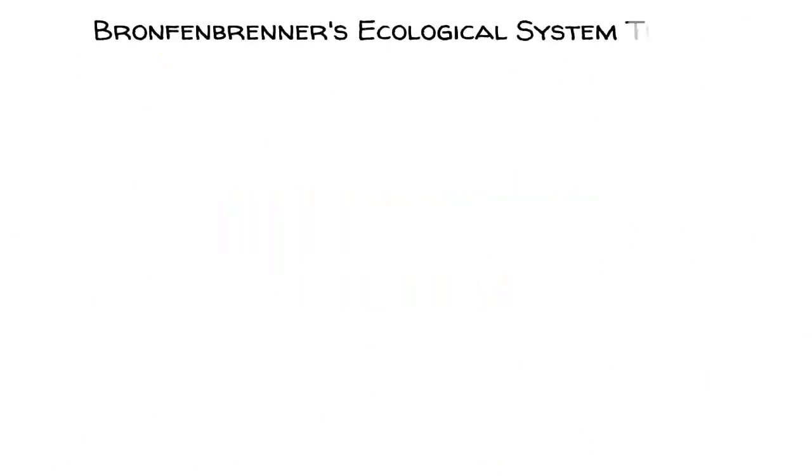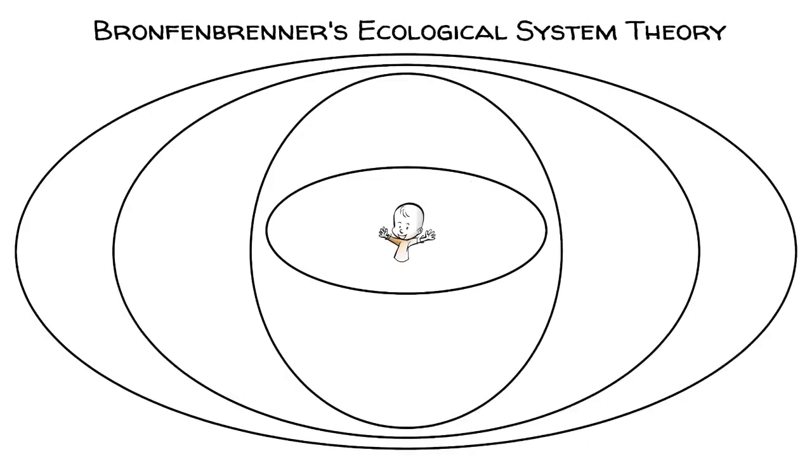Bronfenbrenner's ecological system theory conceives that a child is influenced by five ecological forces. First comes the microsystem of family and friends that affect the child directly.